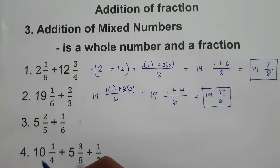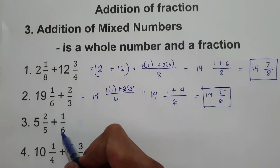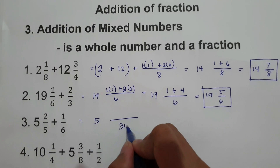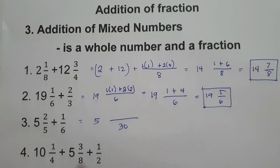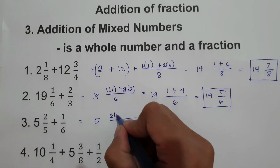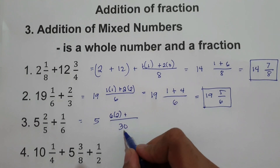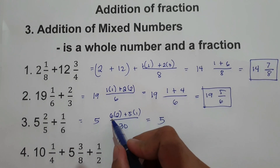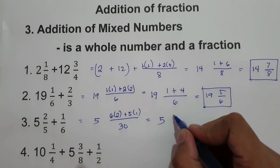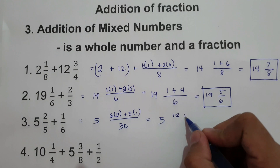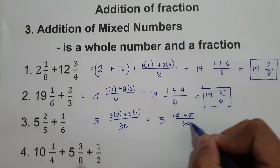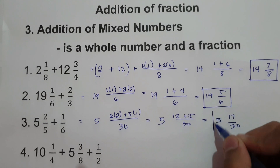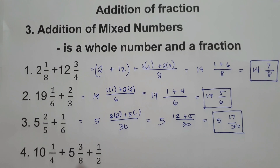Number 3: 5 and 2 fifth plus 1 over 6. We rewrite 5 and then find the LCM of 5 and 6, that's 30 — because 5 multiplied by 6 is 30. 30 divided by 5 is 6, multiplied by 2; plus 30 divided by 6 is 5, multiplied by 1. Adding: 6 times 2 is 12, plus 5 times 1 is 5, over 30. That's 17 over 30. So our answer is 5 and 17 over 30.